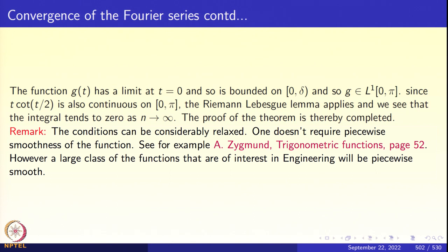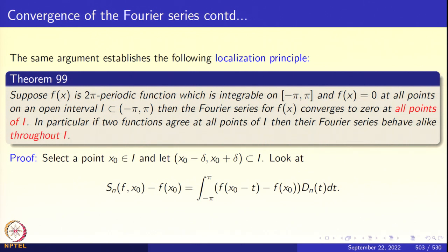The same ideas can be used to prove one more result called the localization principle — Theorem 9.9. Suppose f(x) is a 2π-periodic function integrable on [−π, π], i.e., f is in L¹, and the function is zero on a certain open sub-interval I of (−π, π). This open sub-interval can be terribly small. Then the Fourier series of f(x) converges to 0 at all points of I.